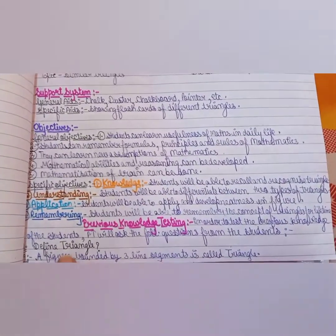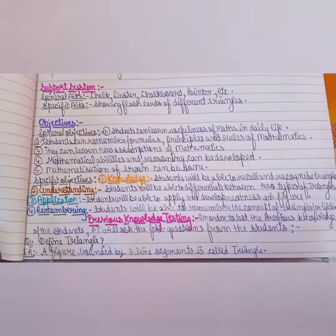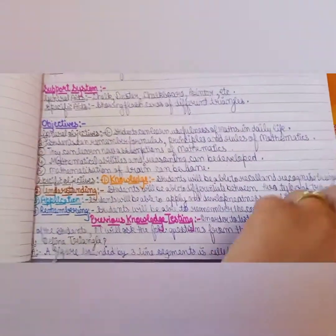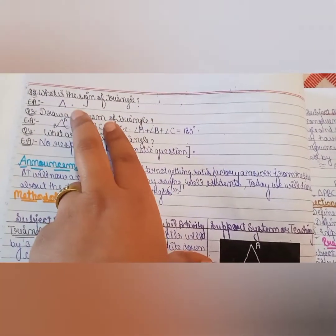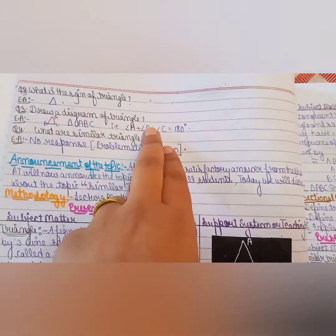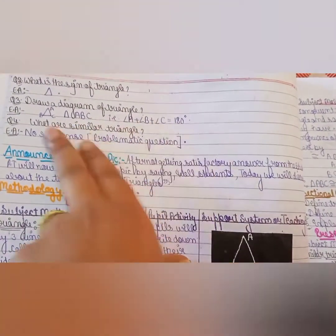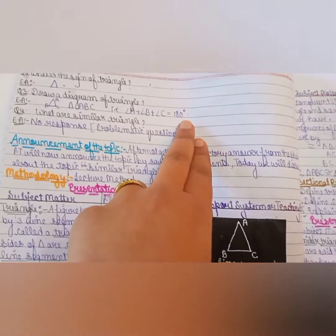The first question is, what is the triangle? The children will give the expected answer. Then we will ask the children about types of triangles, about sides of the triangle, and that the sum of interior angles is 180 degrees.